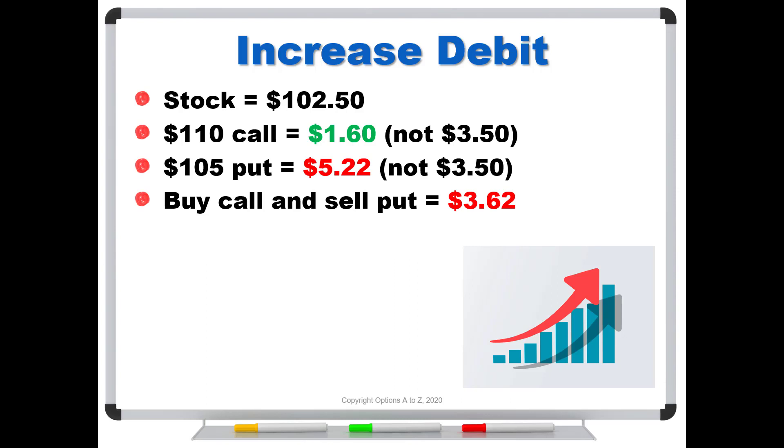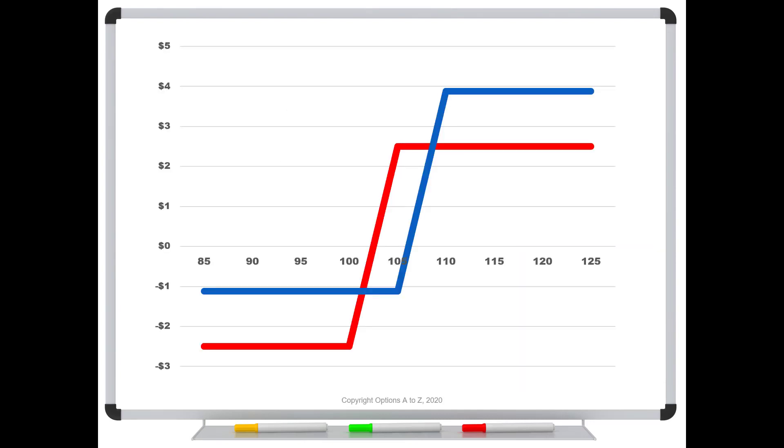Now my maximum gain is $3.88 and my max loss is $1.12. You can step through the same steps I showed you before to get those max gains and losses. Notice we've got a five-dollar difference in our strikes and my max gain and loss total up to five dollars—that's a little check you can see if you did the math right. If we use this collar for $3.62, what happens? Now the blue curve has less to lose and even more to gain. The only way I could do that is to spend money.